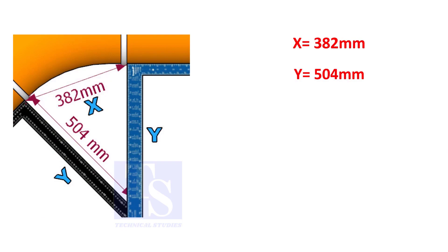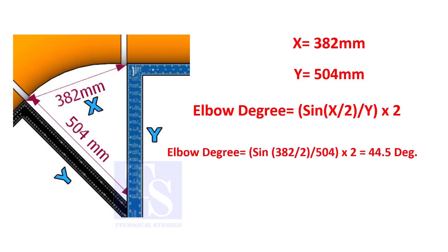Assume that the value of x is 382 and the value of y is 504. Divide the half value of 382 by 504 and convert the value to sine. Then multiply by 2.